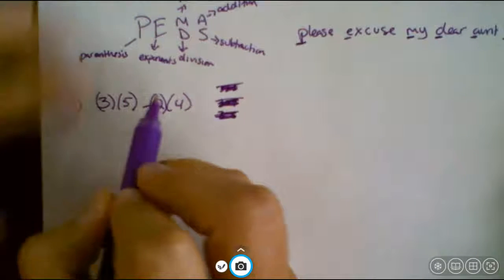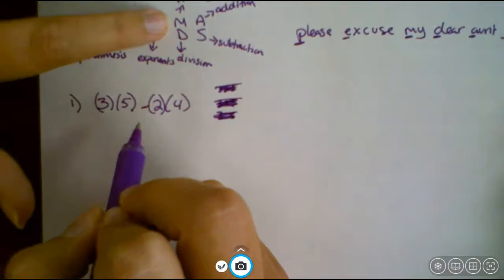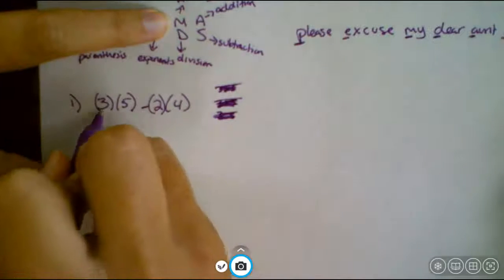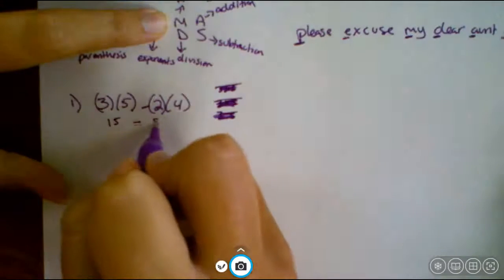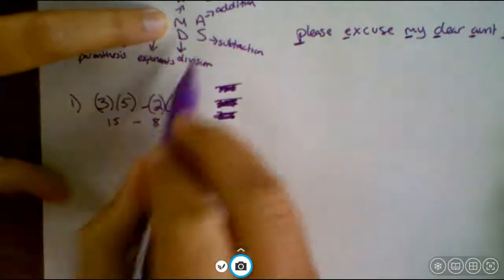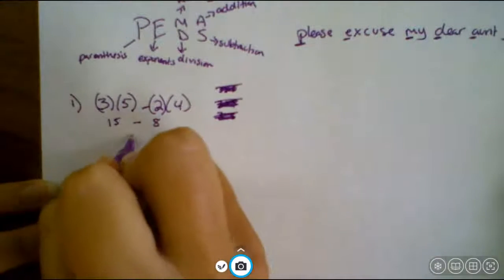So for this one, we don't have parentheses. We don't have any exponents. We do have multiplication, so I'm going to do that first. Three times five is 15, minus two times four is eight, and now we're down to just subtraction. So we go ahead and just finish the problem to get seven.